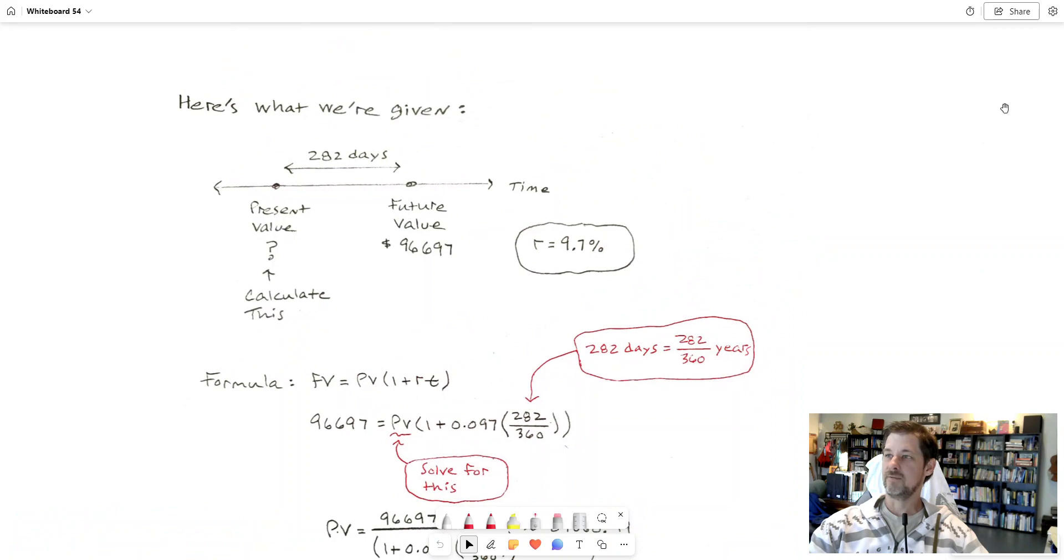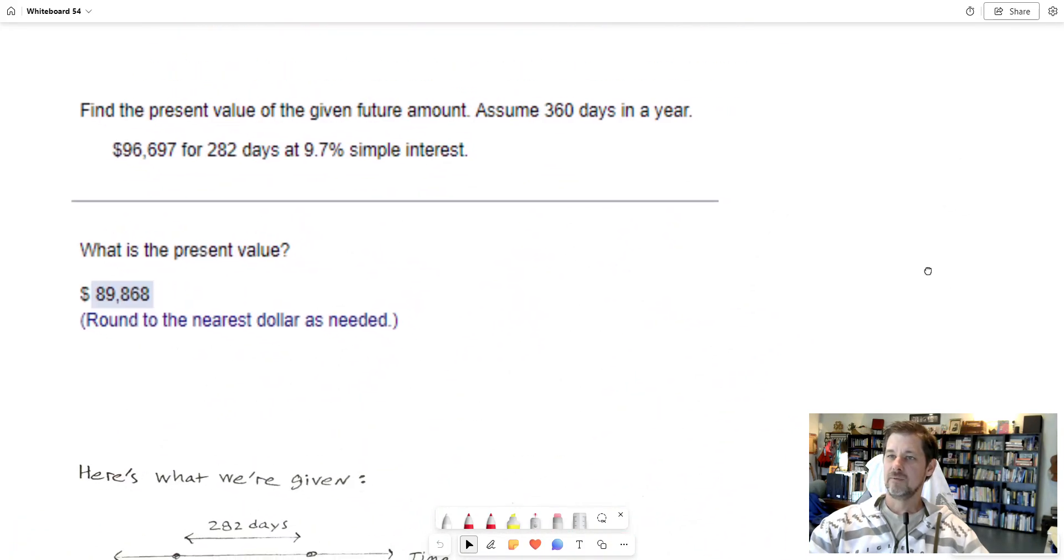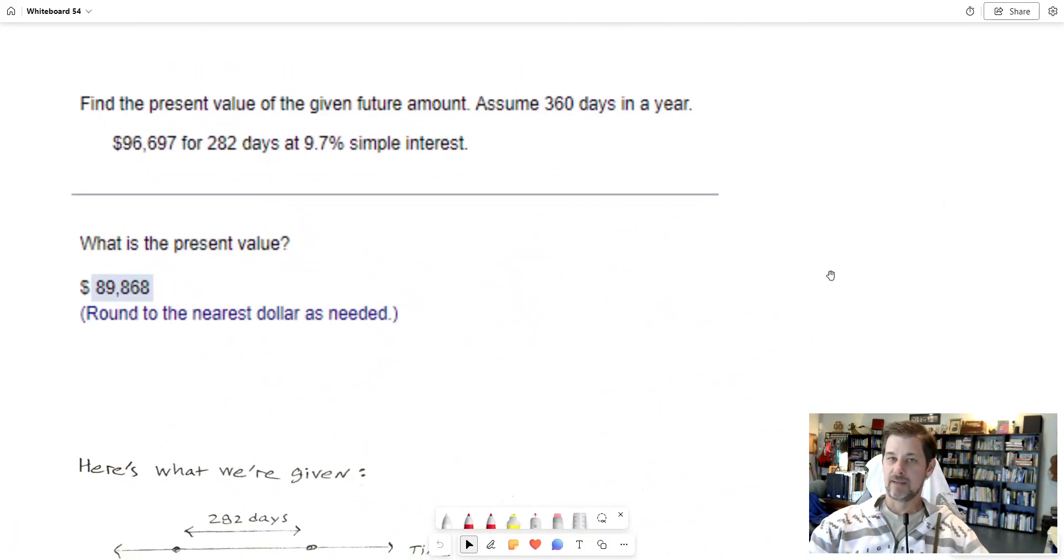So let's use this formula for something. I'll show you an example. Here's an example where we can use that formula. This one, I've taken a screenshot from MyMathLab, and it says find the present value of the given future amount. So it's giving us the future value. And for whatever reason it says assume 360 days in a year, so that's what it says, that's what we'll do. So what is the present value? I'm given the future value 96,697 and I want to find the present value.